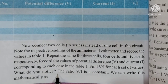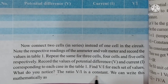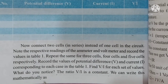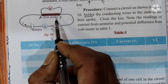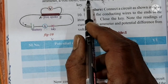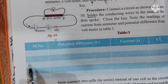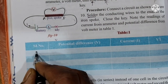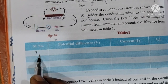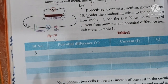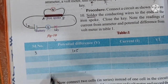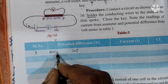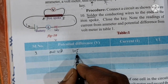Find V by I for each set of values. What do you notice? The ratio of V by I is constant. We can write this mathematically. In the first experiment, connect one cell — one cell means 1.5 volts.